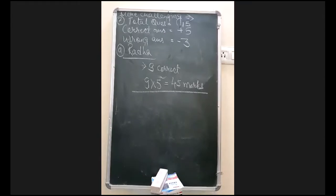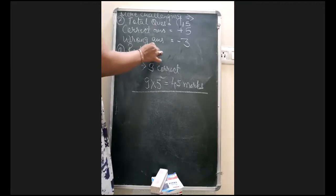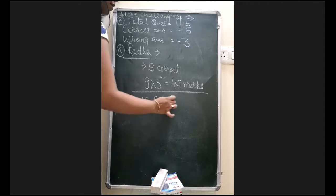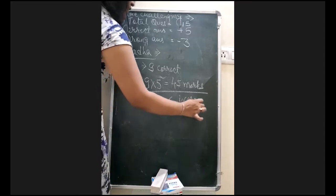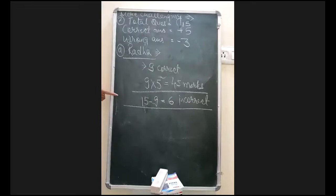It is not written correct questions, incorrect questions, but use your mind. It is telling that she has attempted all the questions. Out of 15, she has attempted all the questions, but 9 are only correct. It is not written here for wrong, but you should understand by your own that if total are 15 and she has done all the questions, it means 6 of her questions were wrong. You have to write it down, this one, by yourself only. That 9 will be correct, and 6 will be 15 minus 9, which means 6 are incorrect also, which is not given in the question. You have to use your mind into that. So here we have 9 times 5, which is 45, for correct answers.